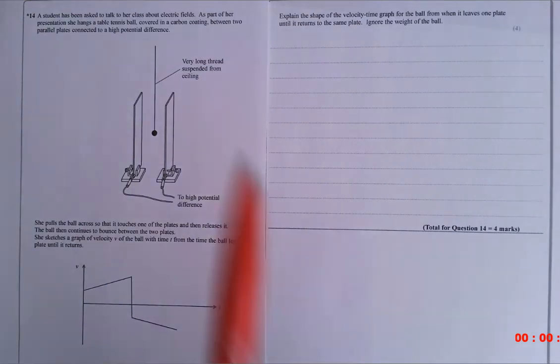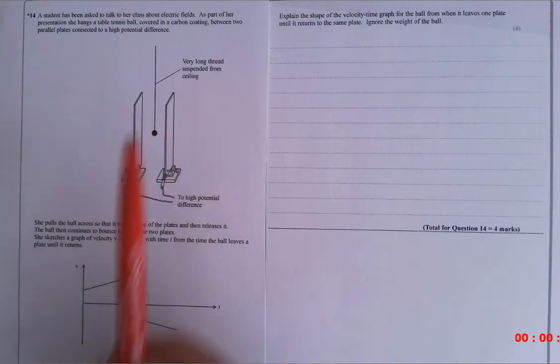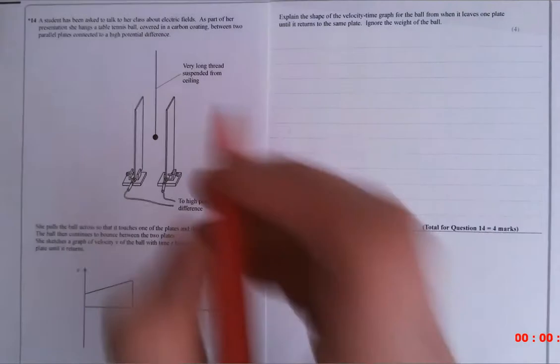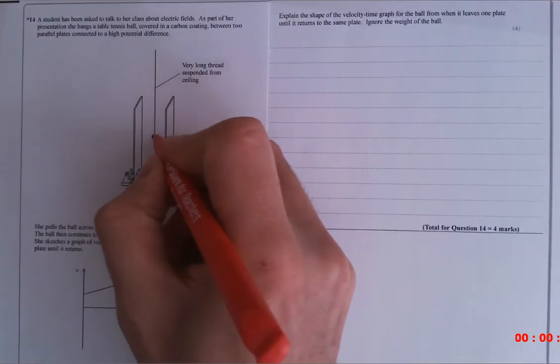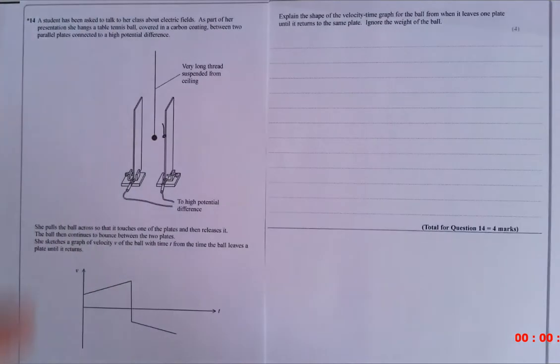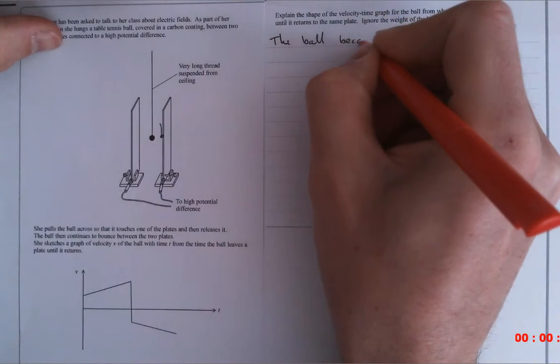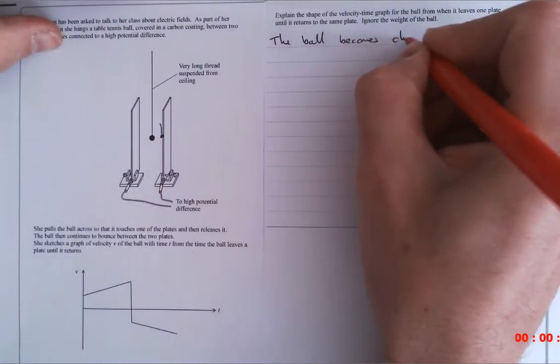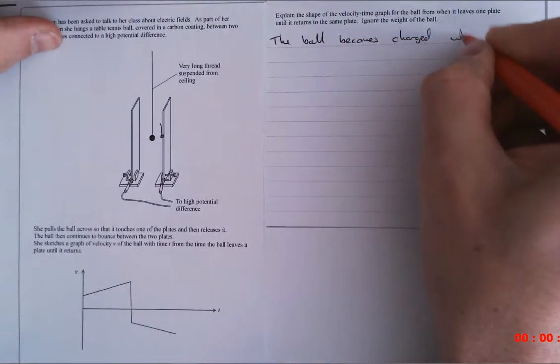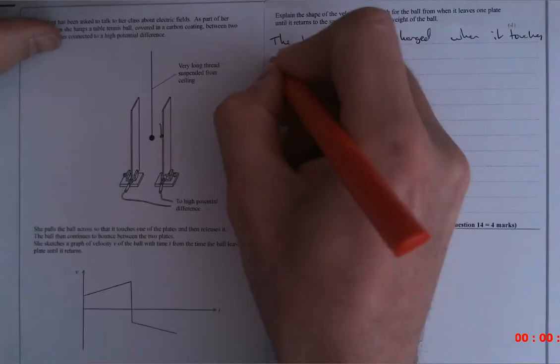We're asked to explain the shape of this velocity time graph for this ball as it moves between the plates. So let's start describing what's happened. The person moves the ball and has the ball touching one of the plates. So at this stage here, what happens?